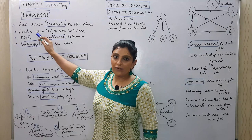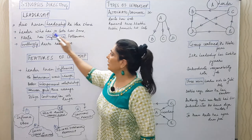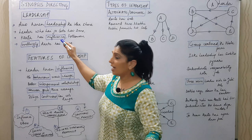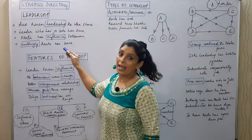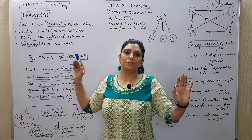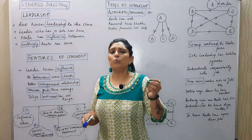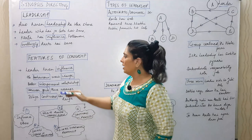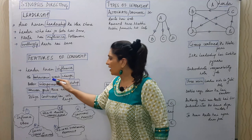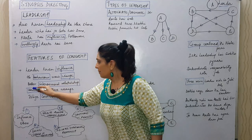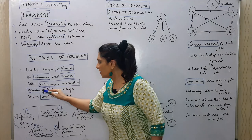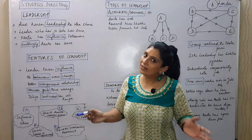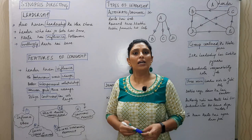Starting with leadership: the leader is the one who takes the dare, karta hai influence, and followers willingly bear it. The features of leadership — these are in points, and I have given headings to the points given in the book: leader exerts influence, brings change in behavior, builds better interpersonal relationships, arranges common goals, and therefore leadership is continuous in its range.